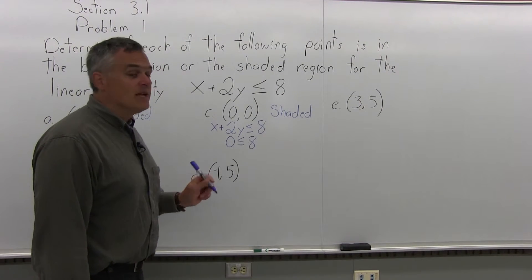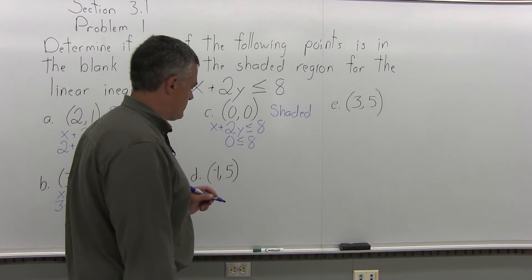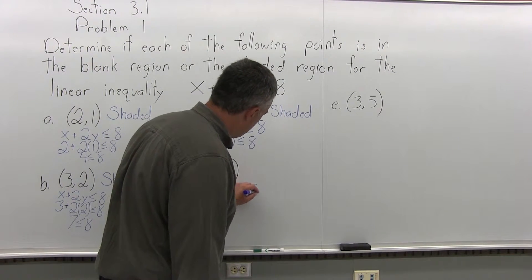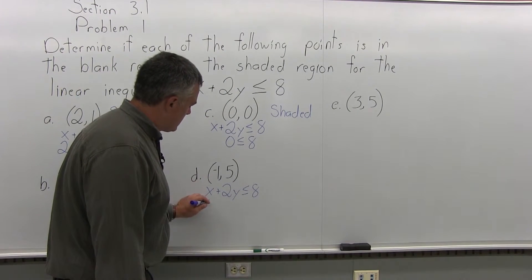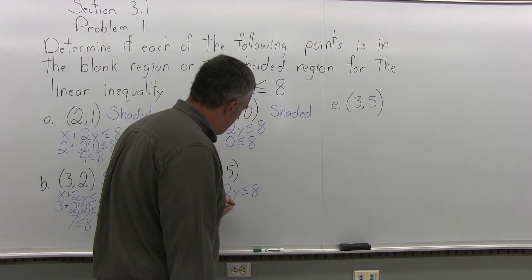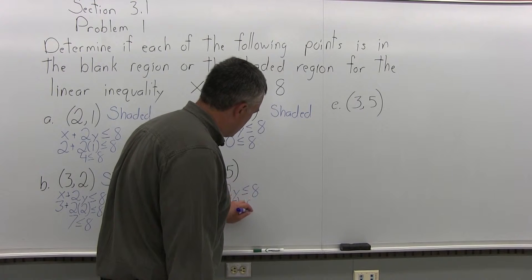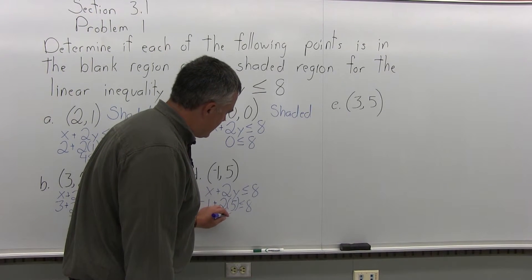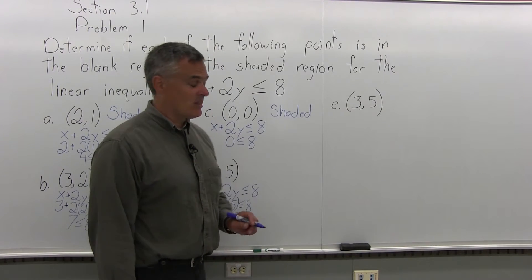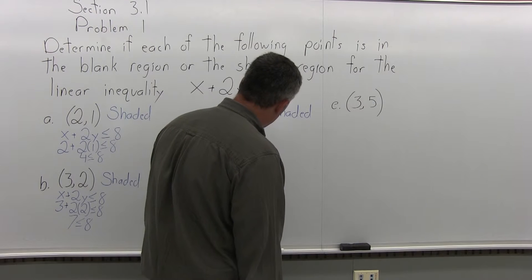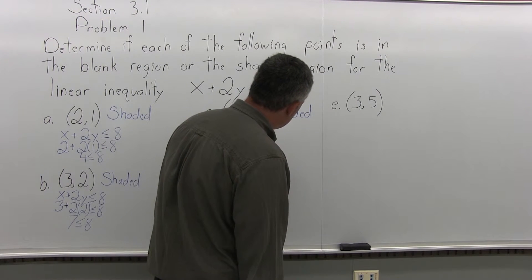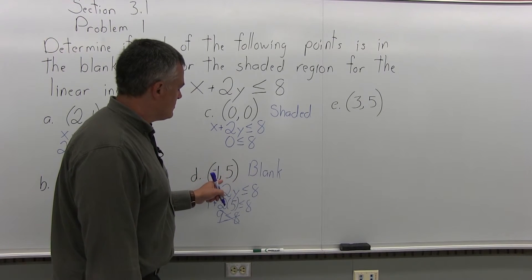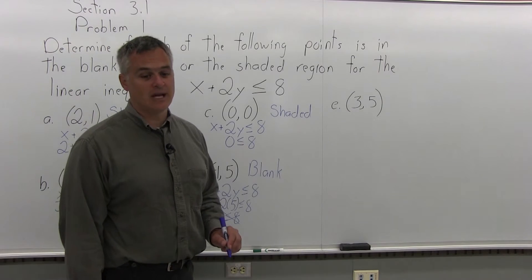Part d: is the point negative 1 comma 5 in the shaded or blank region? Start with x plus 2y is less than or equal to 8. Put in negative 1 for x — pay attention to the sign — and 5 for y, so 2y becomes 2 times 5, which is 10. Subtracting 1 gives 9 is less than or equal to 8. That's not true — 9 is not less than or equal to 8. So the point (-1, 5) is in the blank region of the linear inequality.